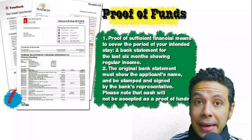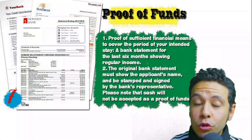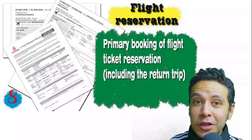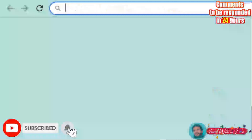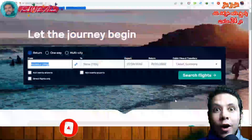You will also need to provide proof of sufficient funds, which is a bank statement showing your balance for at least six months. The original bank statement must show your name and be signed and stamped by bank representatives — cash will not be accepted as proof of funds. You should also provide a flight reservation; an initial booking is acceptable, but in some cases a confirmed booking is required, and remember the reservation must include a return ticket.